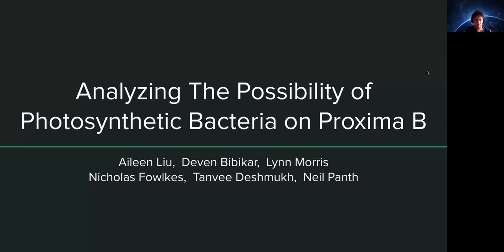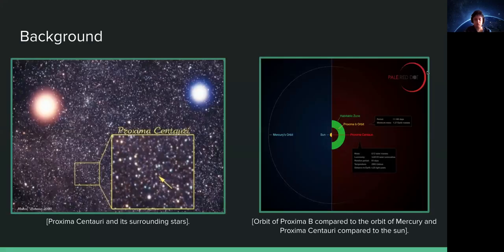And I'm Neil Panth, and our project is about analyzing the possibility of photosynthetic bacteria on Proxima b. Our goal is to analyze the known environmental conditions on Proxima Centauri b and determine using examples of photosynthetic bacteria on Earth whether those types of life may be able to survive in Proxima b, and if so, what biosignatures could be present.